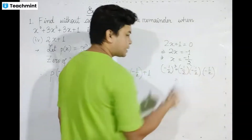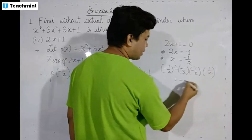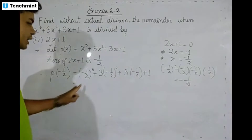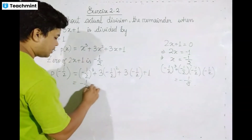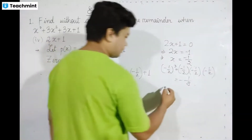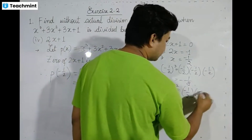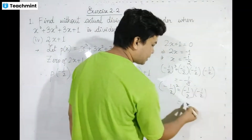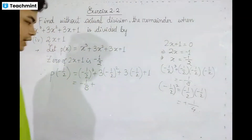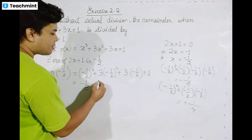So we get: 1 times 1 is 1, 2 times 2 are 4, 4 times 2 are 8. Minus 1 by 8, plus minus 1 by 2 whole square gives minus 1 by 4, and 3 into 1 by 4 gives 3 by 4, with LCM calculations applied.